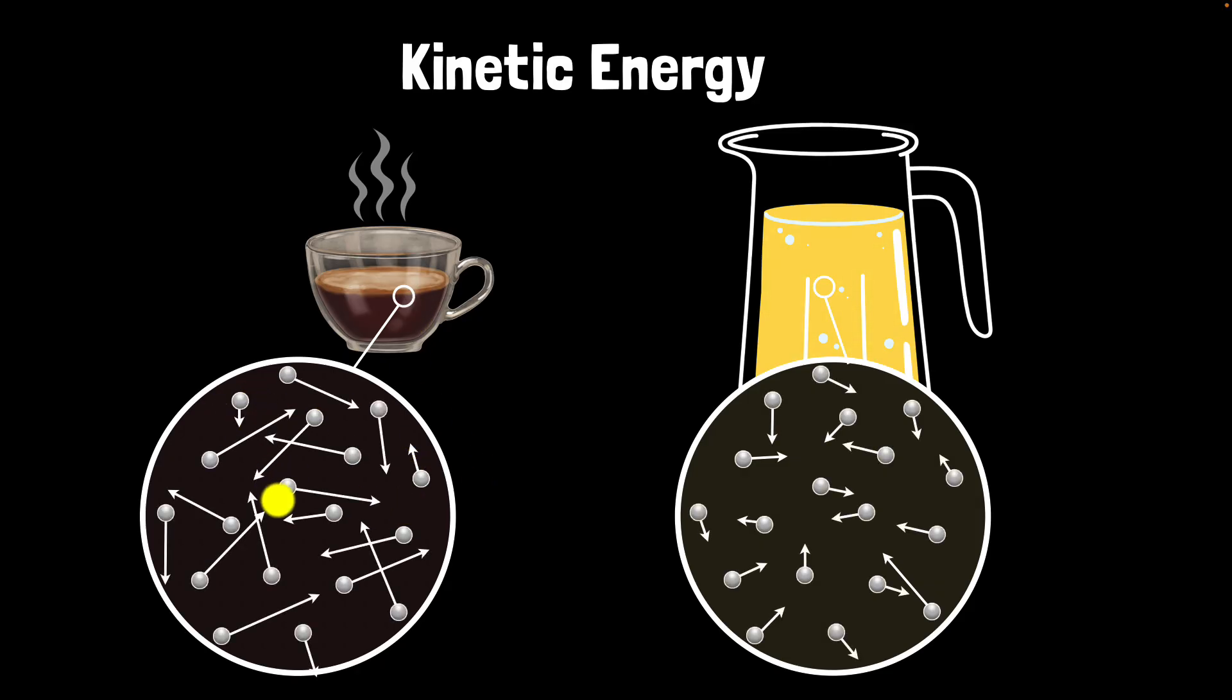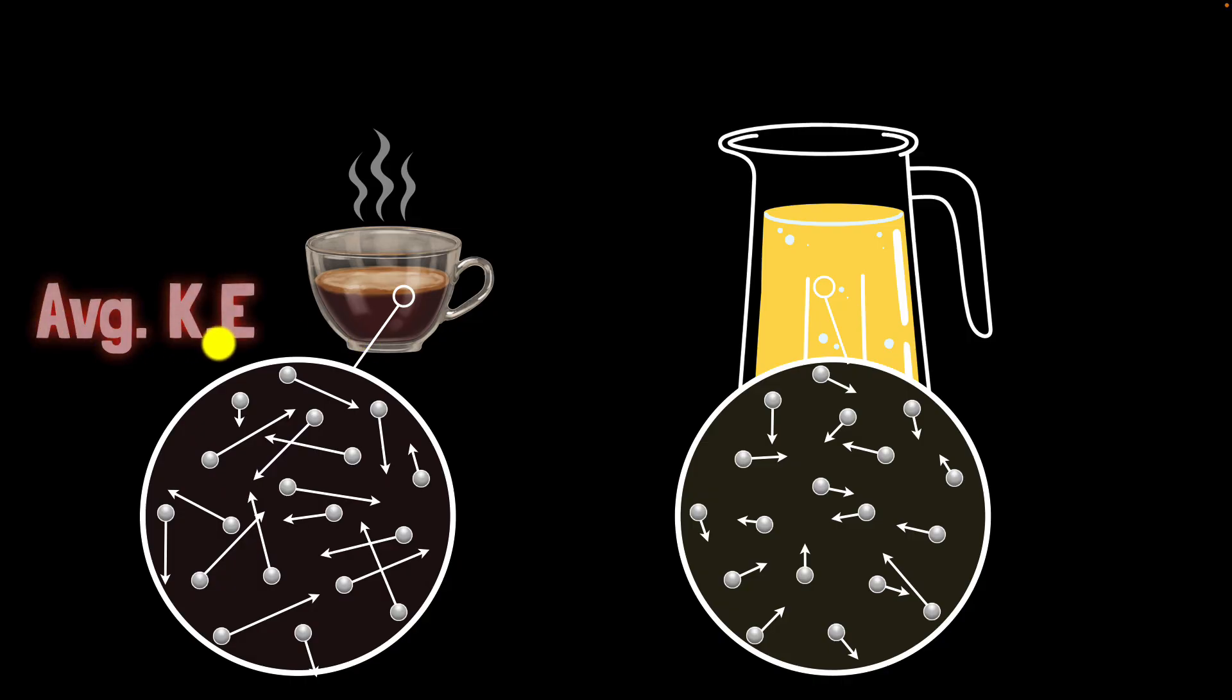But what's important is if you were to consider the average kinetic energy of all the particles over here, kind of like calculating your average grade point, then that average kinetic energy over here would be higher than the average kinetic energy over here. So for a hot coffee which is at a higher temperature the average kinetic energy is higher. And for a cool lemonade which is at a lower temperature the average kinetic energy is lower.